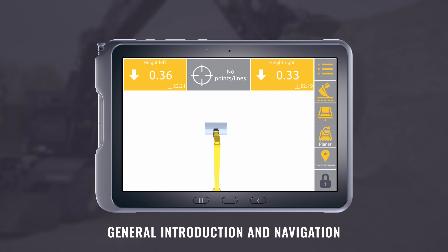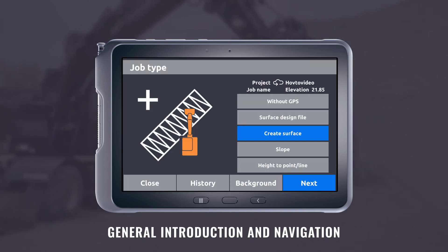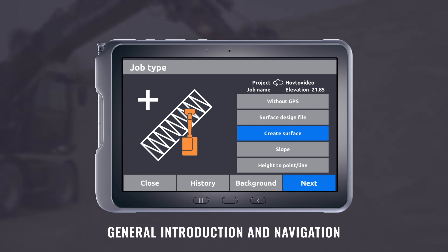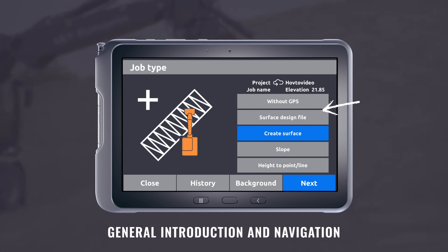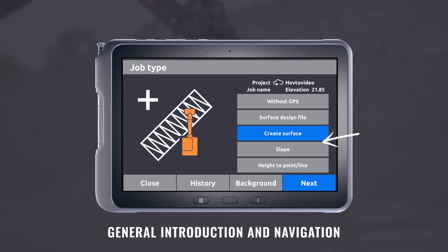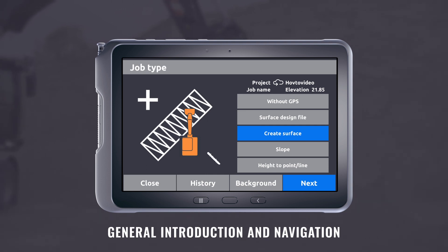For the top button, when you click on it once, you enter into the job types menu. Everything here has something to do with height and design. You can operate without GPS, select a design file, create a surface design, operate according to a slope, or set the height according to a point or line. You also have the option to choose a background file or find your history from previous jobs.